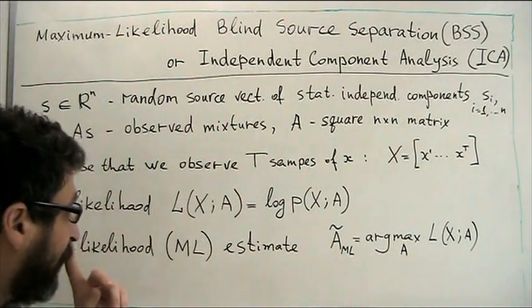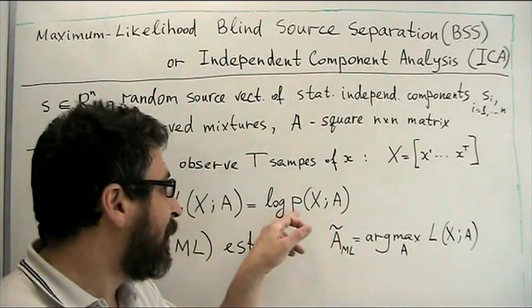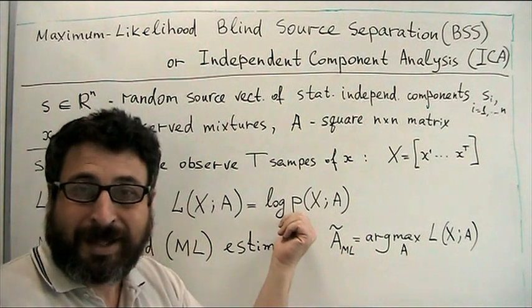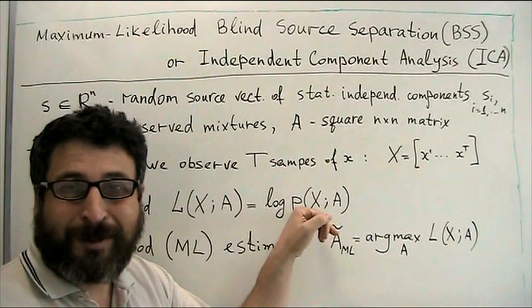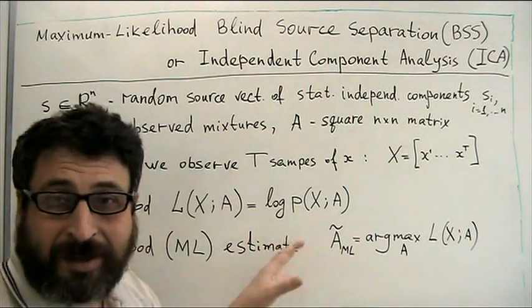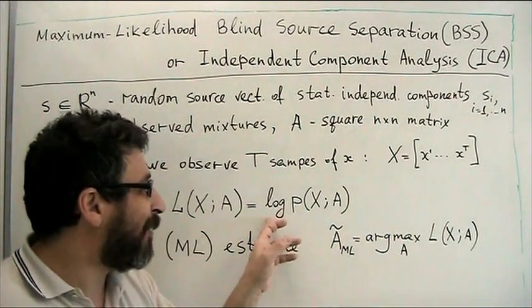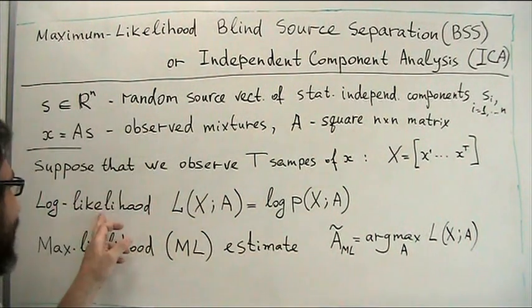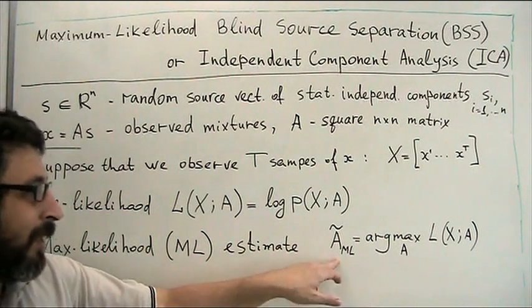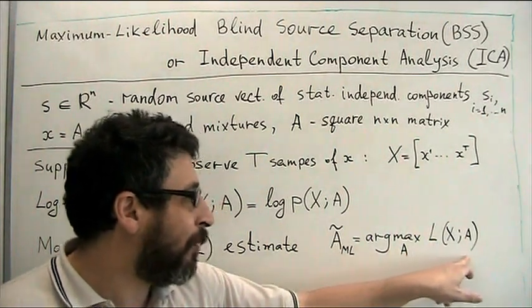And what we will do then? We will say that our estimate of A is such that our observed data have maximum probability. We will actually maximize probability density at the point of our observation over all possible matrix A. And it is convenient from computational and derivational point of view to use log probability instead of probability, and this is called log likelihood function. So, maximum likelihood estimate of A is just taking argmax over A of log likelihood function.